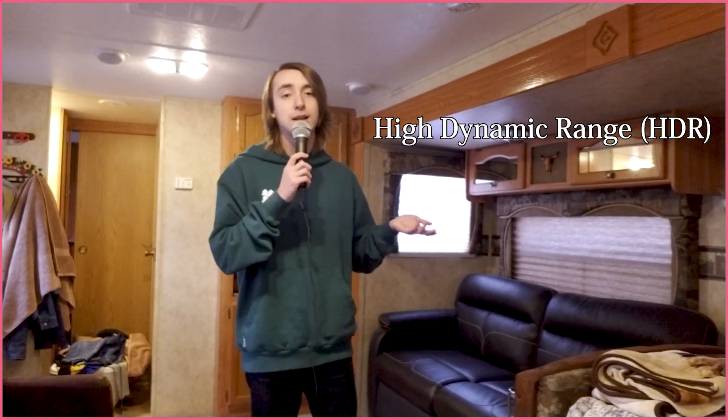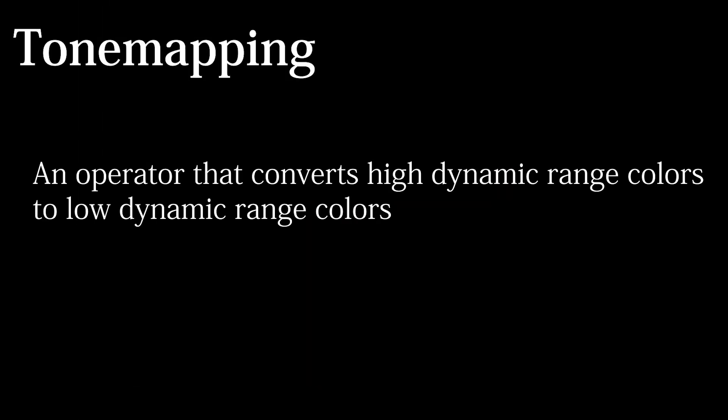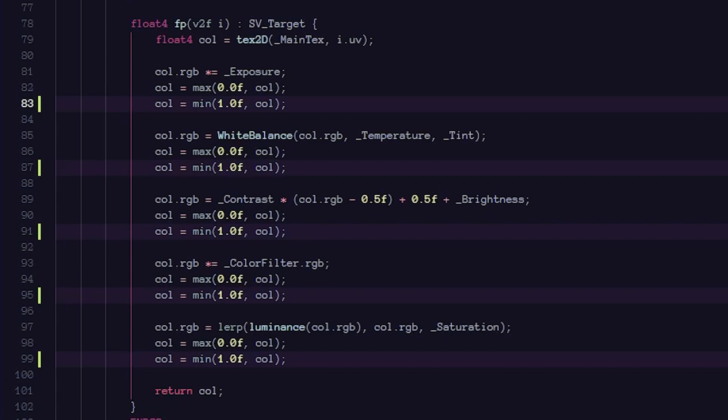Colors that exceed 1 are said to be in high dynamic range, but since our computers can only display colors in low dynamic range, we need to get our high dynamic range colors into the 0 to 1 range. Tone mapping is the act of mapping high dynamic range colors into the low dynamic range. But in order to tone map, we need high dynamic range colors, so we need to remove our limiters.